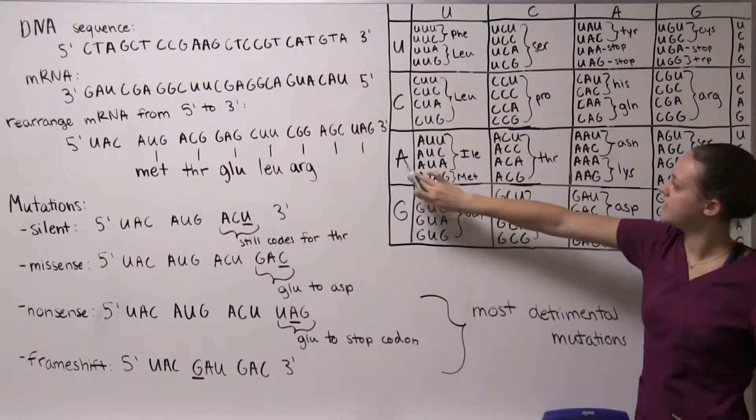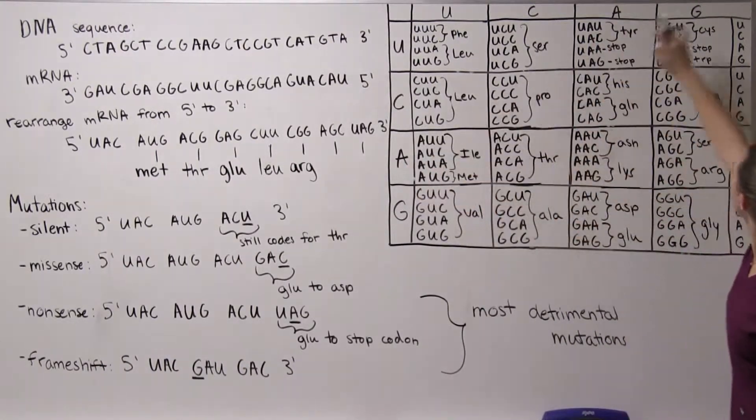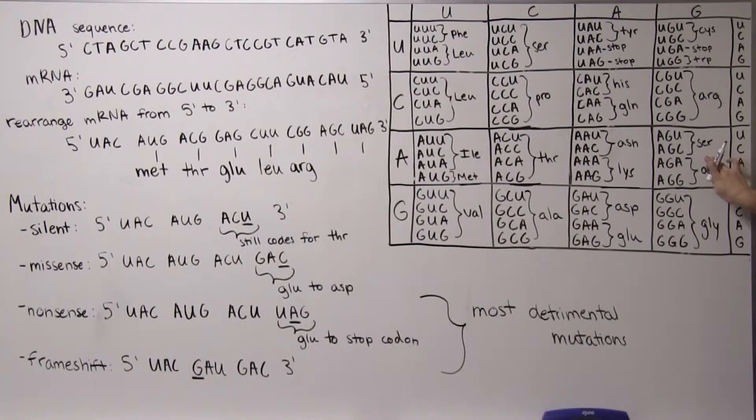Okay AGC so we have A, we have G so we're here and then C right here so AGC is going to code for serine.